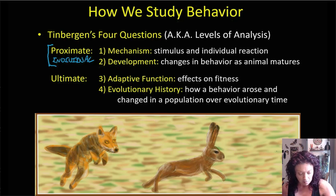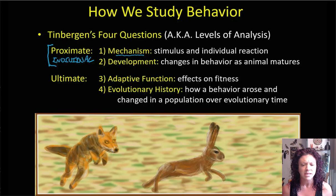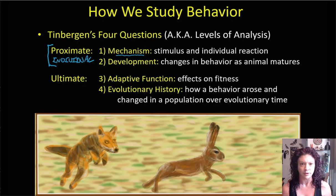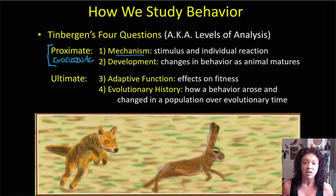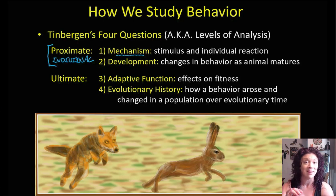Mechanism refers to the actual mechanical stimulus — something you can touch, observe, and poke at. The mechanical stimulus in this case, for our picture here, would be seeing the coyote — the rabbit visually spotting that coyote. That's the stimulus. The individual's reaction is to move its legs so that it's running away. Mechanism is very specific to exactly what's happening in that moment.